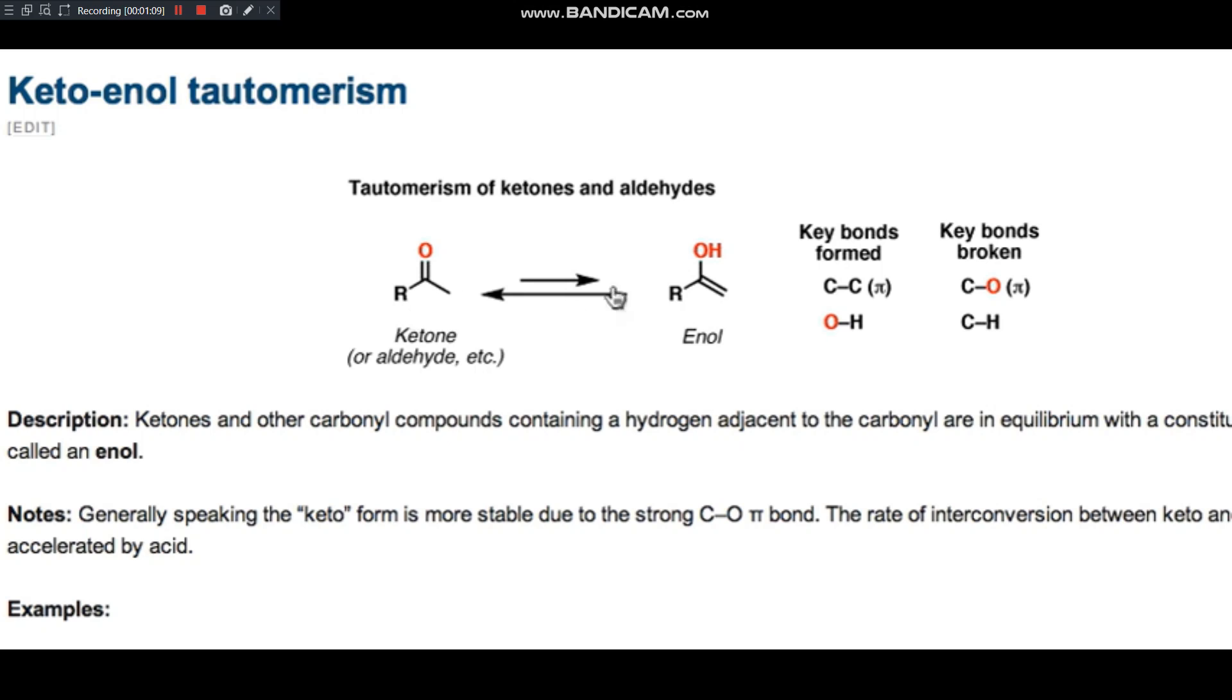These types of constitutional isomers are called tautomers. And if you look at what the bonds were forming and breaking here, we are breaking a carbon-hydrogen bond. We're breaking the carbon-oxygen pi bond. We're forming a carbon-carbon double bond here, and we're forming an oxygen-hydrogen bond. And this will always be the case for tautomerism. We are always forming and breaking these bonds, no matter what situation you're looking at. This is always going to be the case. This is the pattern for this reaction.